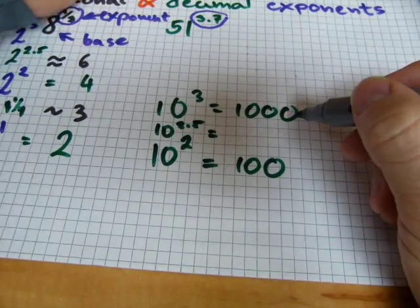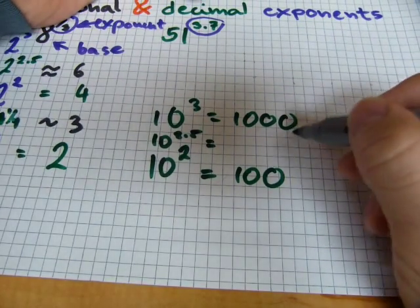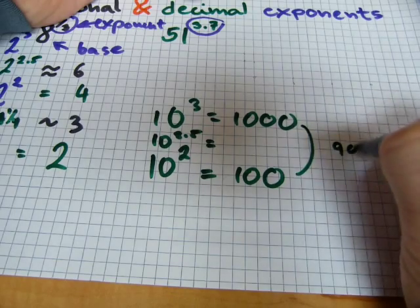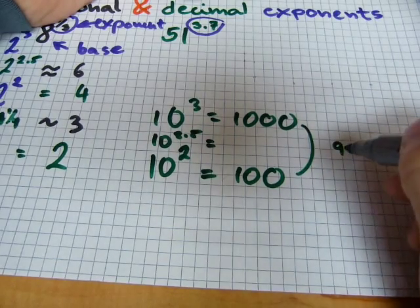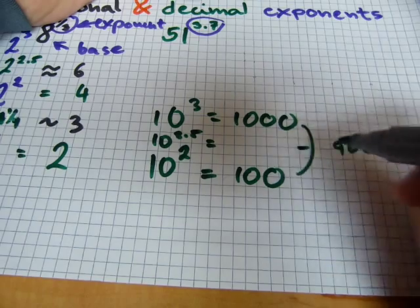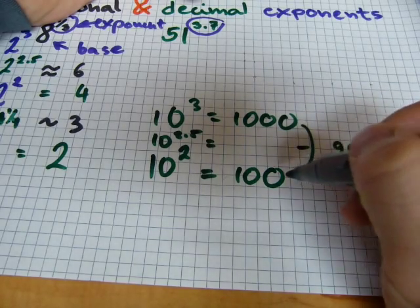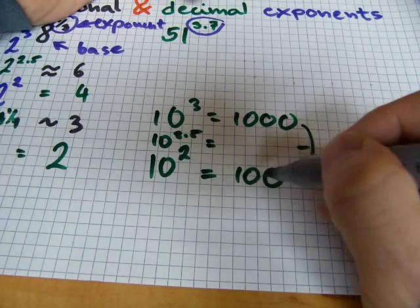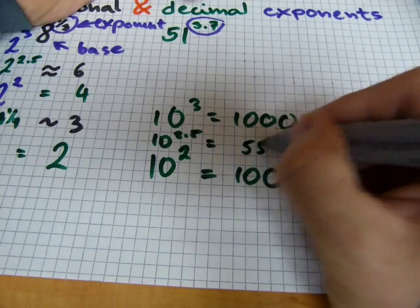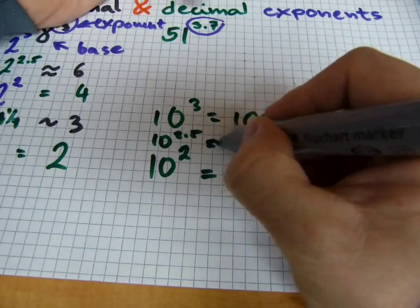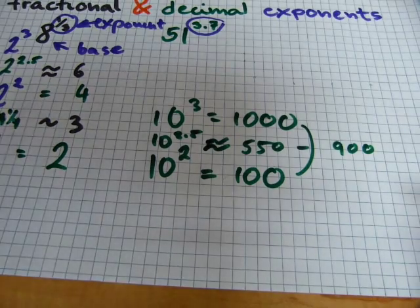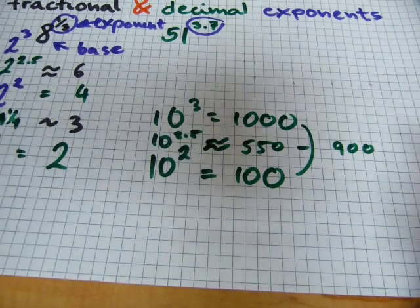Let me see. From 100 to 1000, that's a jump of 900 here. That's 900 in total. So, half of 900 would be 450. It's halfway through. 450 needs to be added to 100, so it's about 550-ish. 10 to the power of 2.5 could be estimated to be 550.